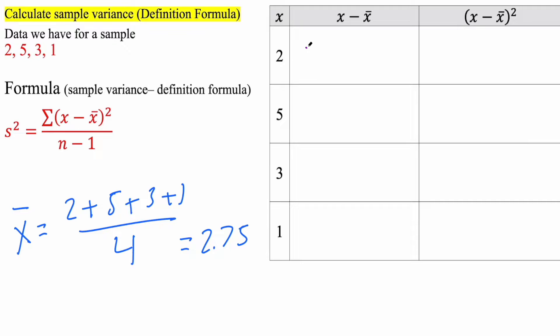So x is 2 minus 2.75. Likewise, 5 minus 2.75. And so the first one, we're going to get negative 0.75. The second one, we're going to get 2.25.